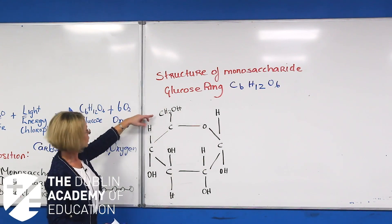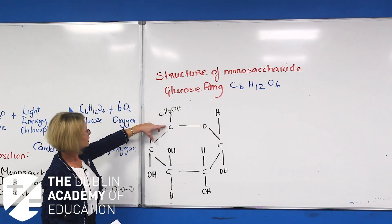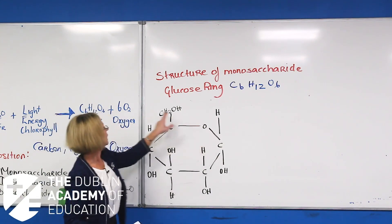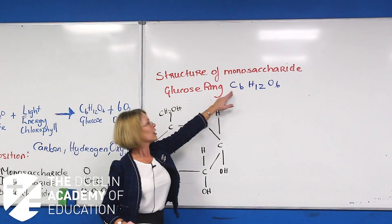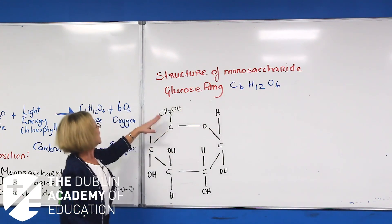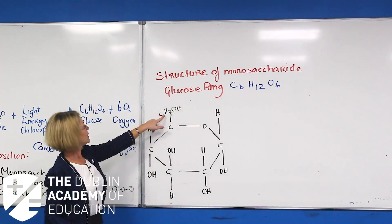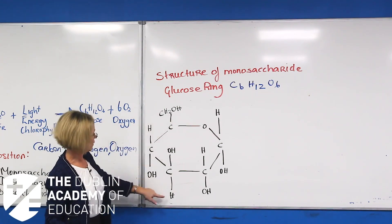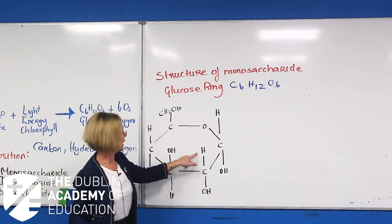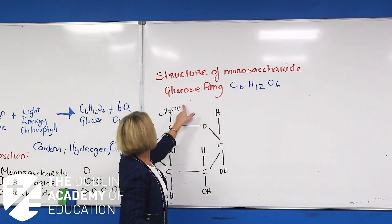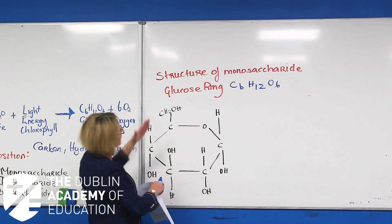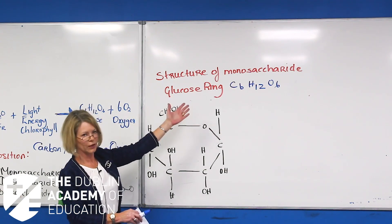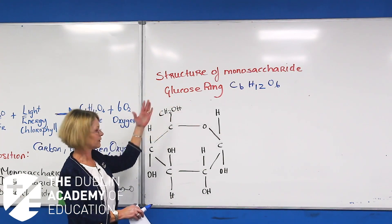We're going to count our carbons first, starting with the inner ring: one, two, three, four, five, and another one here — six. This gives us our C6, six carbons. Then we count the hydrogens. We have H2 — that's two hydrogens — continuing through: three, four, five, six, seven, eight, nine, ten, eleven, and twelve. That's where you get your H12. Then repeating the process for oxygen gives you six oxygens. This is where you get the formula C6H12O6.